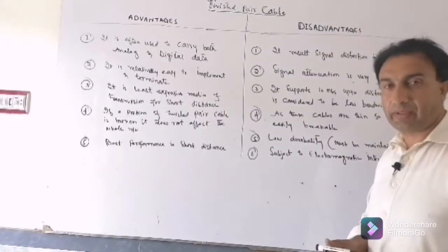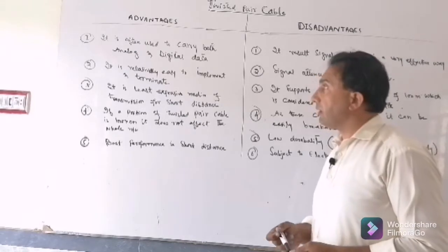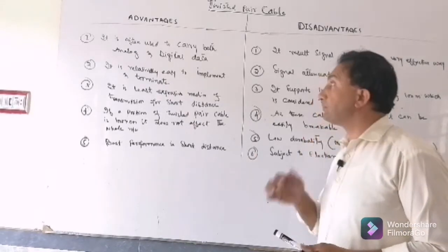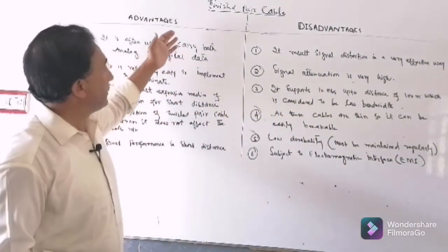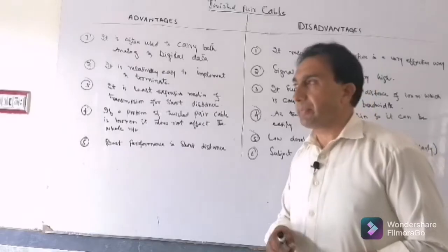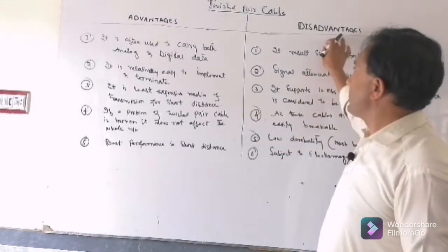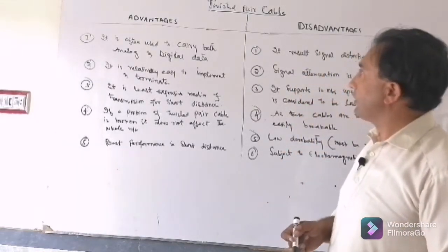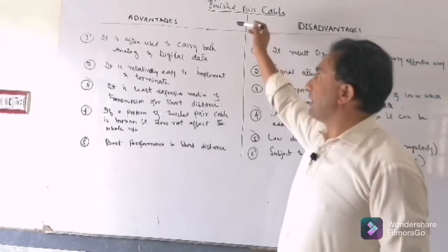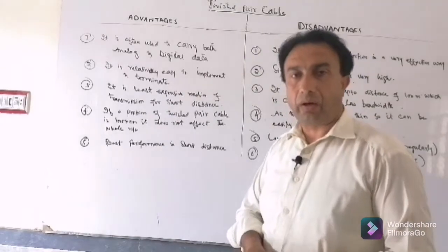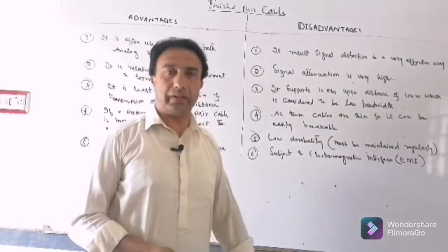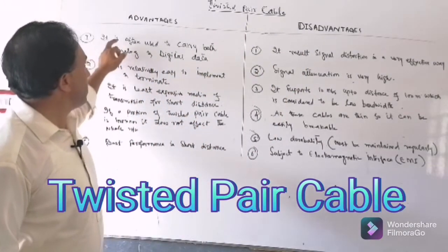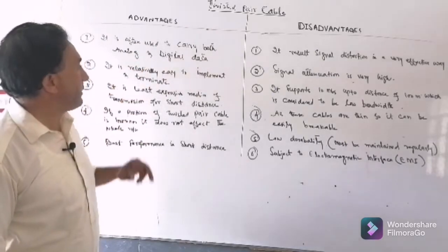We will talk about the advantages and disadvantages of the twisted pair cable. The first advantage is that it is often used to carry both analog and digital data.